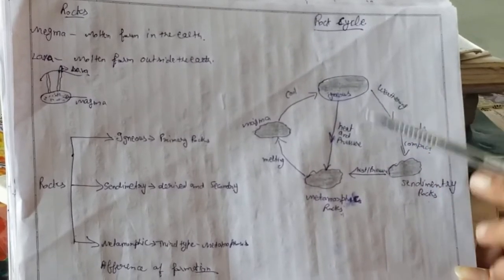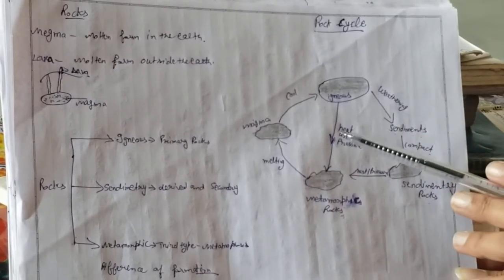This is the rock cycle. We can see how the transformation works through the shape of the rock cycle.